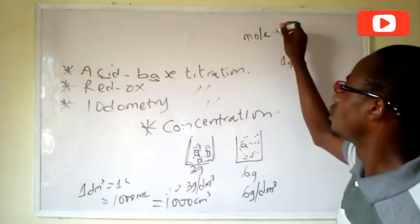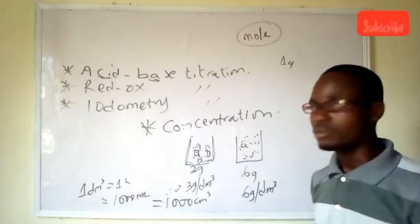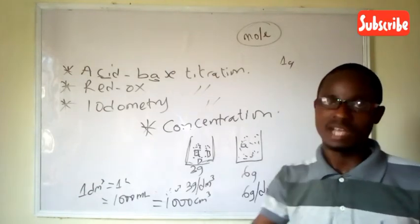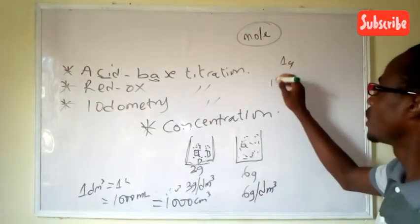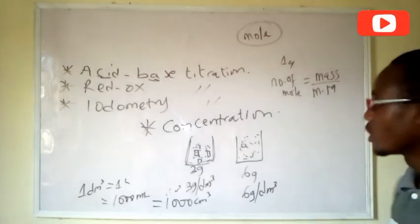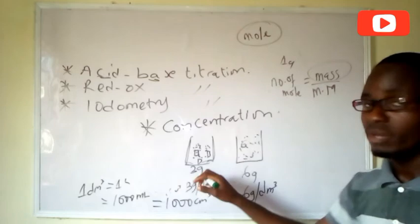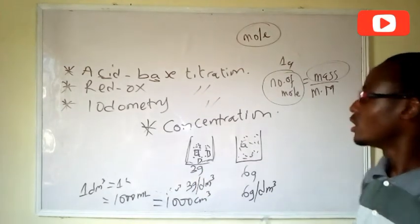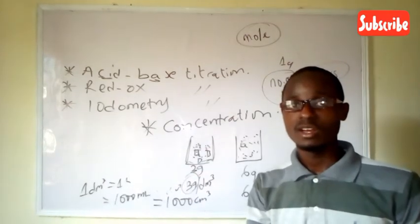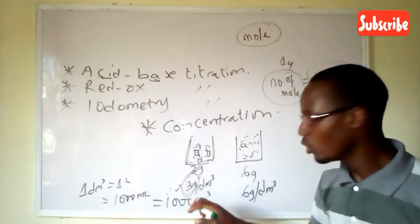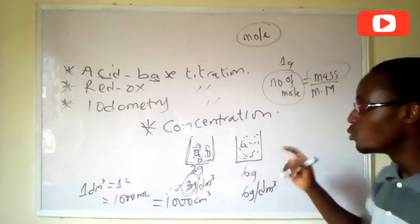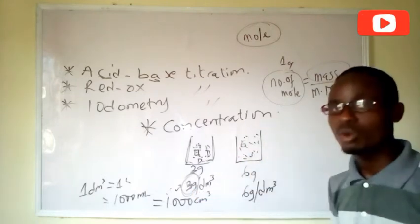Mole is one of the quantities we use in chemistry. Mole has a relationship with the mass of the substance dissolving in the solution and the molar mass of that substance. We know that number of moles equals mass over molar mass. The mass is what is dissolving in the solution, and you can think of converting moles to grams like converting centimeters to meters. This three grams is called the mass concentration.